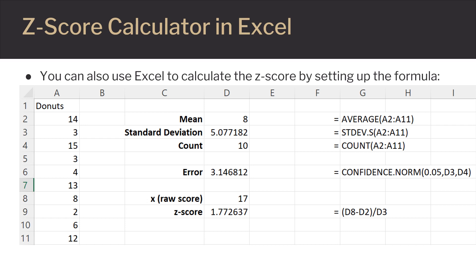Keep in mind, this formula will require your mean, standard deviation, and raw scores to have cells dedicated to their values. So, to find the Z-Score, you are going to use the command equals, parentheses, select the cell that has your raw score value, minus the cell that has your mean value.